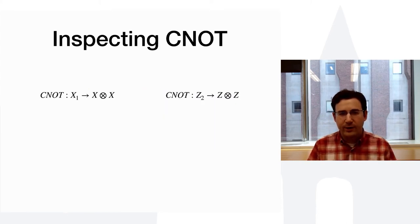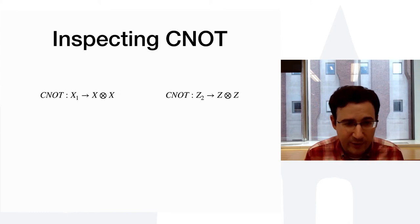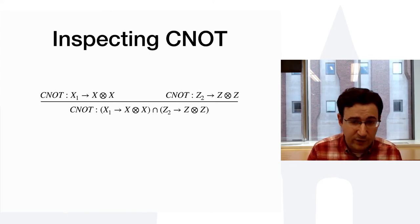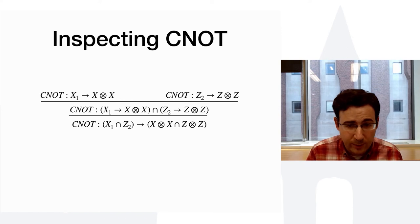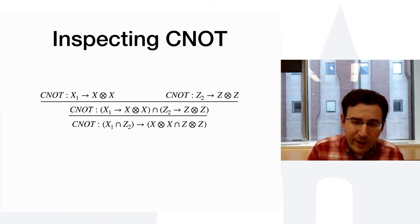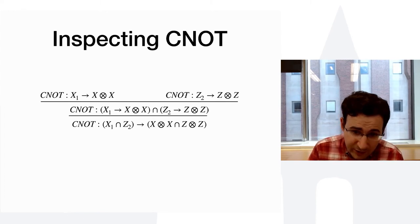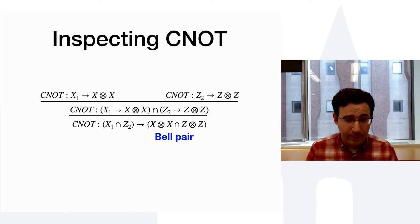And that's not a big surprise to you, but it sort of gives you a sense of what this system can do. So, likewise, let me give you another example. So, we know that CNOT, using the notation from the previous slide, takes X1 to X tensor X and Z2 to Z tensor Z. We can combine that as an intersection. That's a standard typing rule. We can distribute again, as we did previously. And here we have the outcome, X tensor X intersect Z tensor Z. And that's the way we represent a bell pair in our type system.